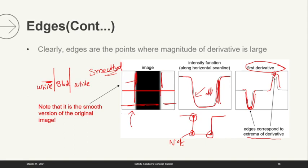Edges correspond to the extrema of derivatives — the maxima and minima. This is the basic idea behind finding edges for any computer vision algorithm. You can apply any smoothing; it's not necessary to apply Gaussian, but Gaussian is good compared to box filter. This is only valid provided we are performing linear filtering. Canny edge detection is only valid for linear filtering, so if we apply median filtering it won't work.